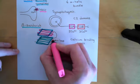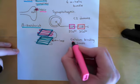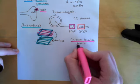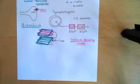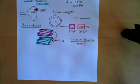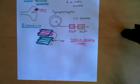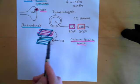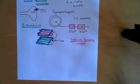The calcium ion can be coordinated in the middle of the loop. C2A and C2B both have this beta sandwich structure — C2A will have two calcium binding sites within this beta sandwich, and C2B will have three calcium binding sites within its beta sandwich.